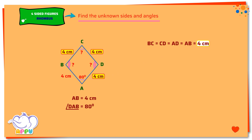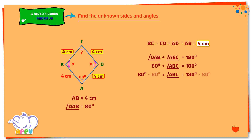Let's find angle ABC. We know that the sum of each pair of angles between two parallel sides is 180 degrees. Angle DAB plus angle ABC equals 180 degrees. 80 degrees plus angle ABC equals 180 degrees. Subtracting 80 degrees from both sides, we get angle ABC equals 180 minus 80 degrees, so angle ABC equals 100 degrees.